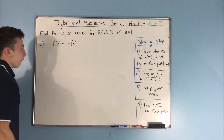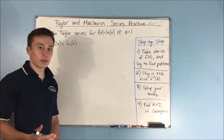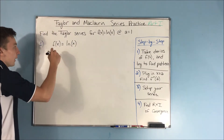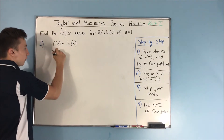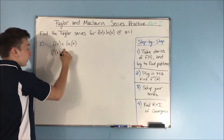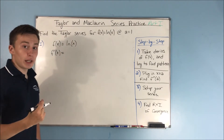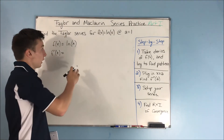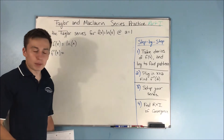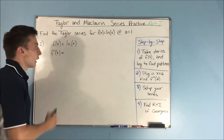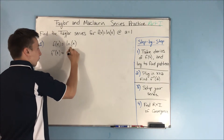We know that f of x is natural log of x. We take our first derivative, and instead of writing it as 1 over x — because we know that's what the derivative is — we're going to write it as x to the negative 1.